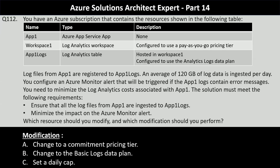For the modification, the options are: change to a commitment pricing tier, change to the basic logs data plan, or set a daily cap. Since there is an average of 120 GB of log data per day, you should change Workspace 1 from the pay-as-you-go plan to a commitment pricing tier. With commitment pricing, you can commit to buying data ingestion starting at 100 GB per day at a lower price than pay-as-you-go. This minimizes cost while preserving the alert functionality.